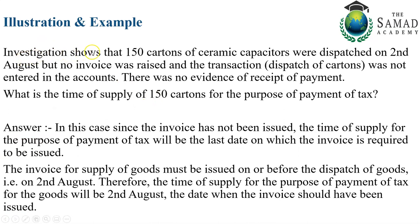Example 2: Investigation shows that 150 cartons of ceramic capacitors were dispatched on 2nd August, but no invoice was raised and the transaction was not entered in the books, and there was no evidence of receipt of payment. Here, since goods movement occurred, Section 31 says invoice must be raised on or before removal of goods. Since dispatch happened on 2nd August, by default the time of supply and the tax invoice date is 2nd August.